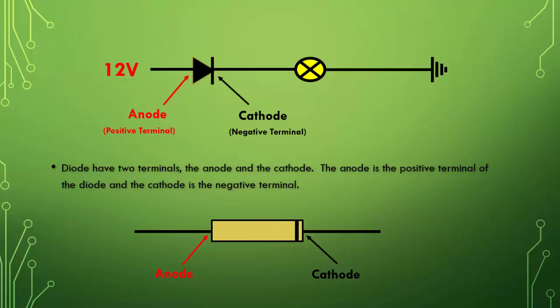So now that we know what a diode is, let's move on to the next lesson where we talk more about forward bias and reverse bias.